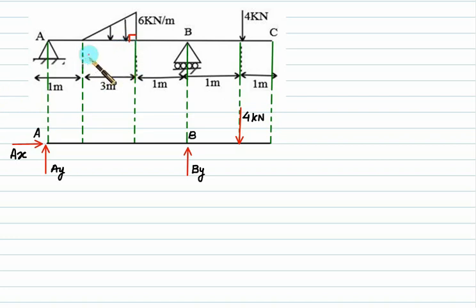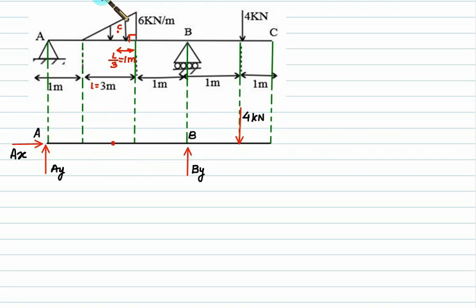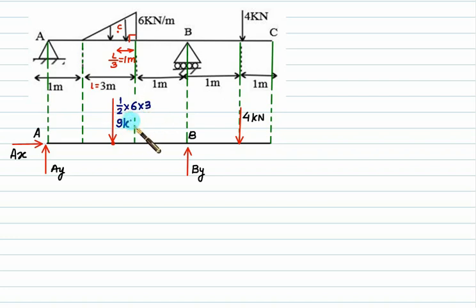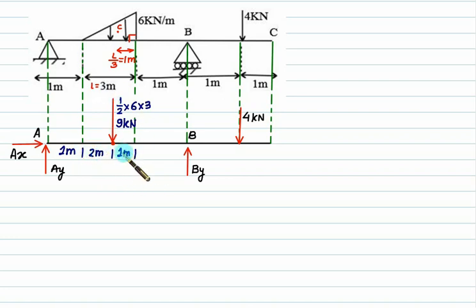First, check the 90-degree end, then locate the centroid at L by 3 from that 90-degree end. For this triangular UVL load, we show one equivalent point load acting at point C. The area of the triangle gives the equivalent point load: 1 by 2 multiplied by height 6 and width 3, which equals 9 kilonewton. The distance L by 3 is 3 by 3, equal to 1 meter. So the remaining distance is 3 minus 1 equal to 2 meters.